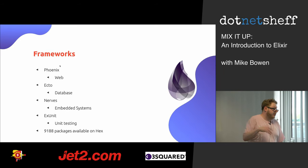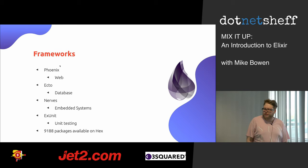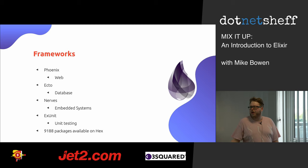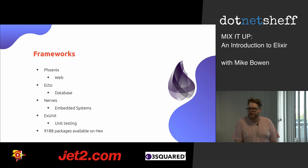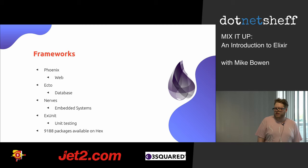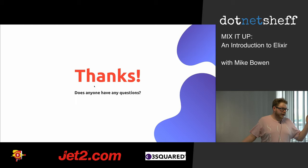There are a variety of frameworks available: Phoenix is the de facto website creation framework following MVC; Ecto is for databases; Nerves is for embedded systems; and ExUnit is for unit testing.